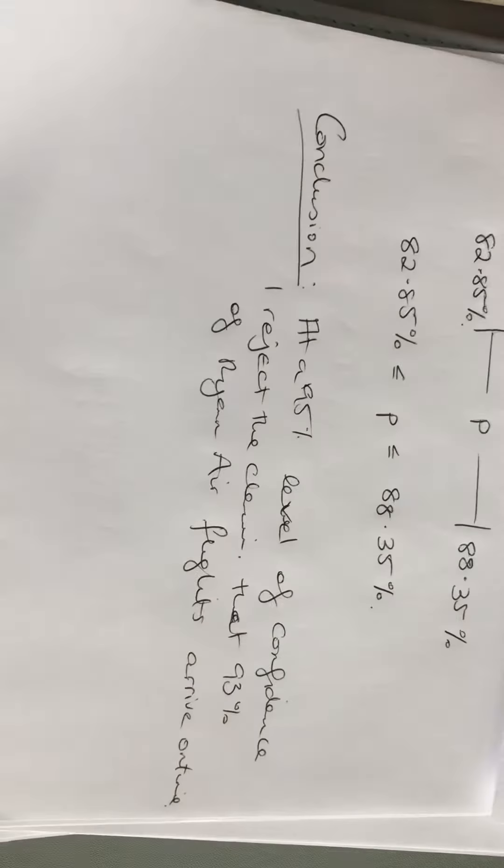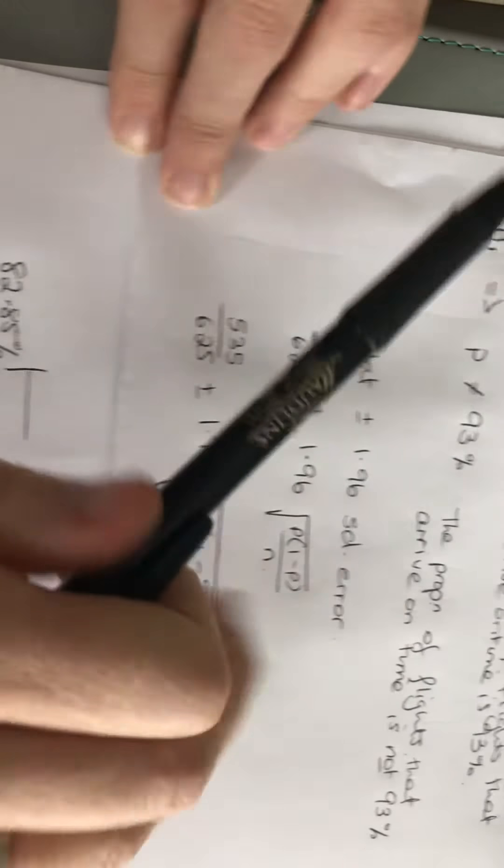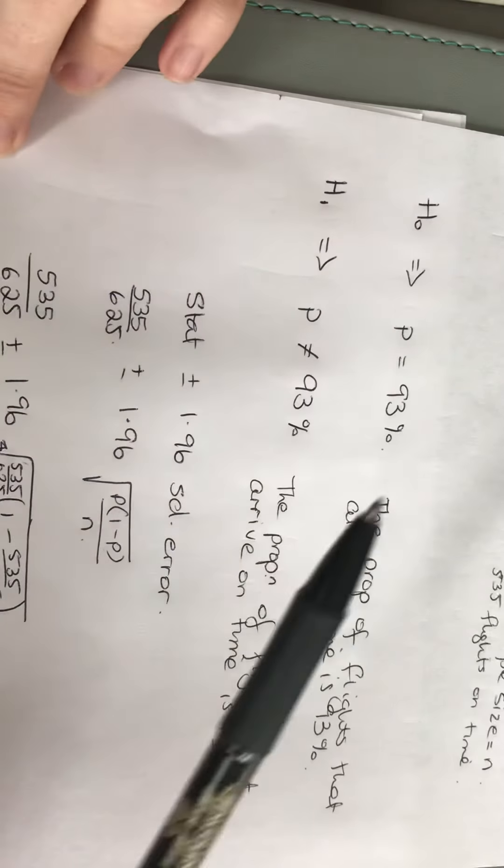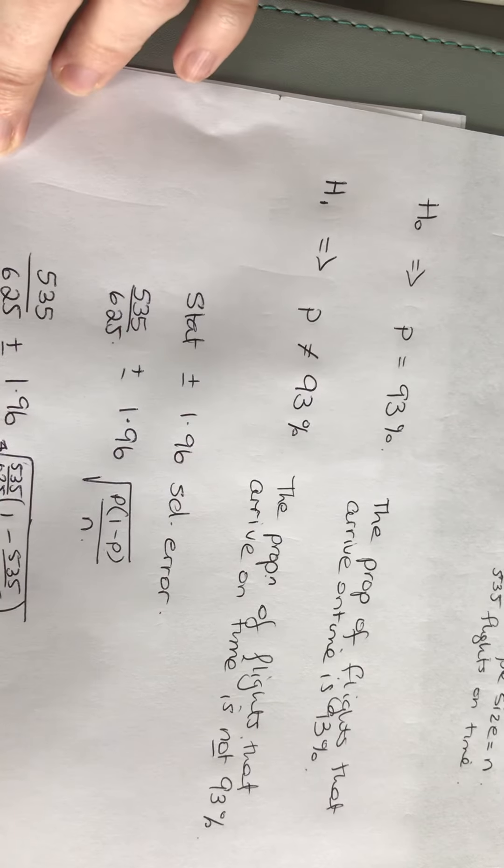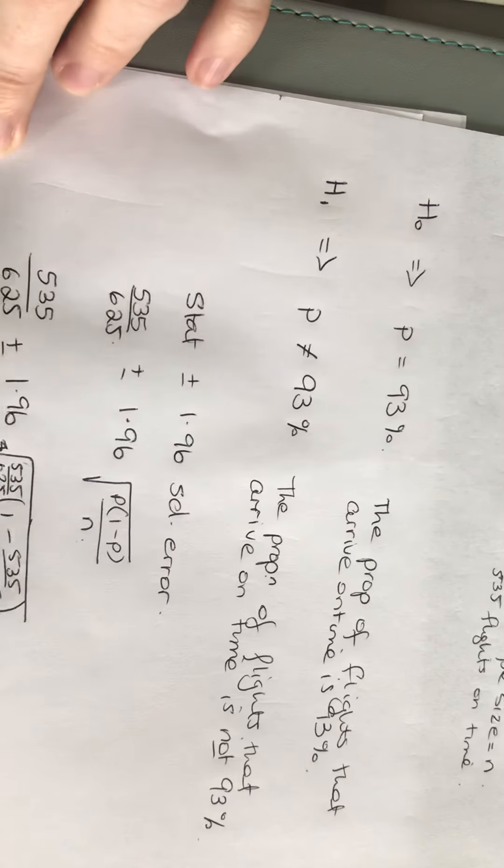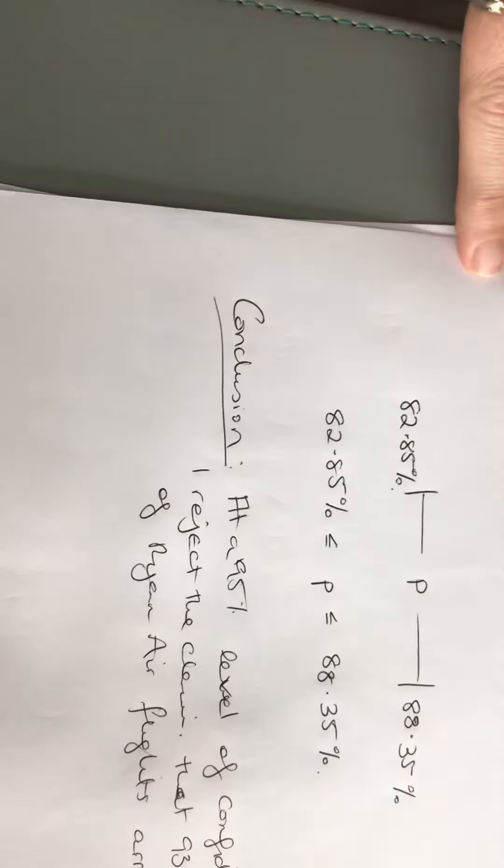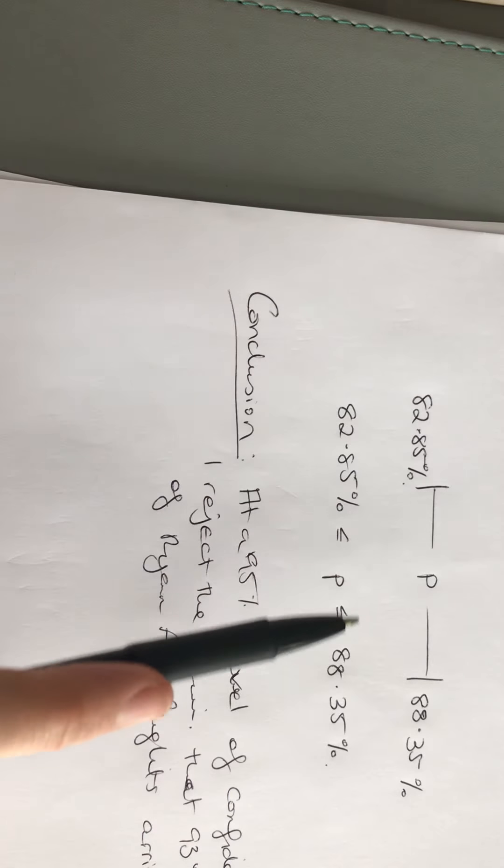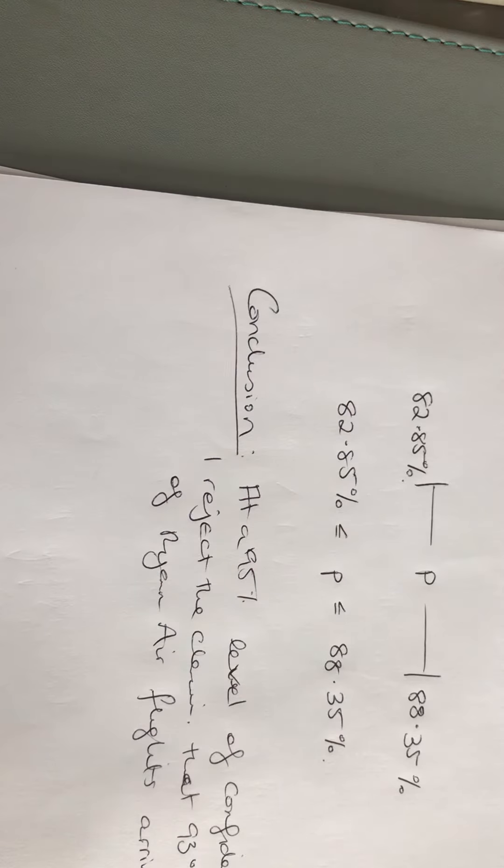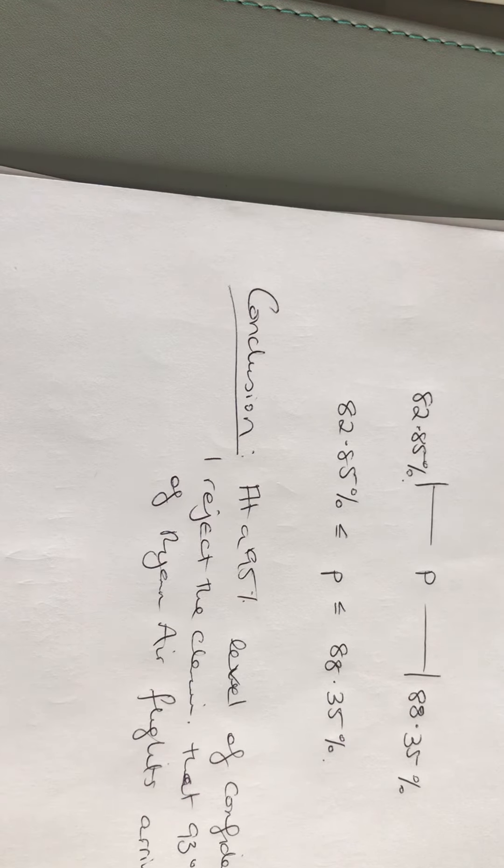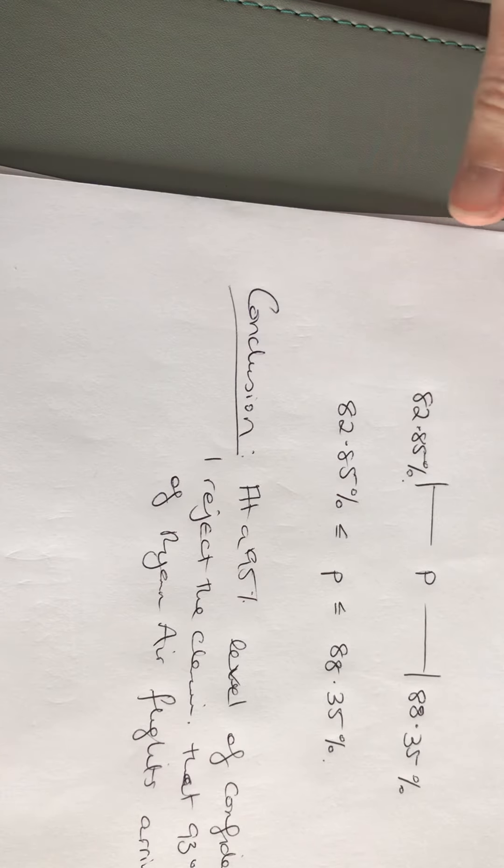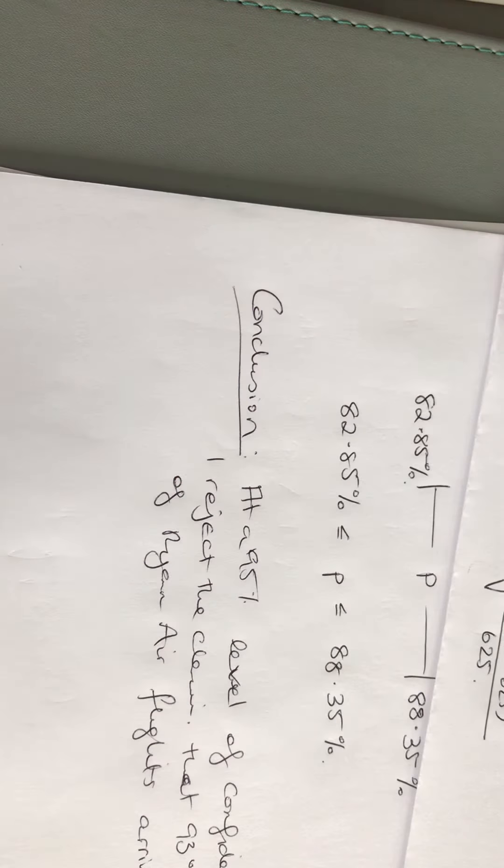I reject the null hypothesis. Back up here. The null hypothesis happens to be the same as their claim, so I'm rejecting their claim. Something else is happening because my interval is between 82% and 88%, and they're saying 93%. So from the statistics that I've done, from the sample that I've taken, I'm rejecting their claim.